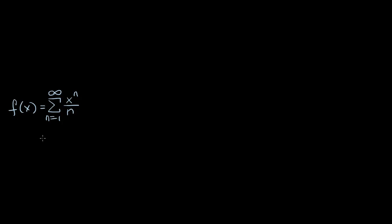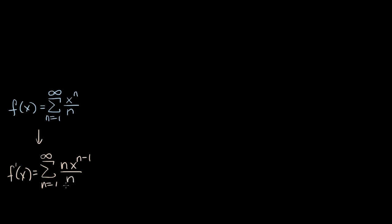What do I mean by that? Well, that means that the derivative of f, f prime of x, is just going to be the derivative of each of these terms. So that's going to be the sum from n equals one to infinity. The derivative of x to the n is n times x to the n minus one, so I could write this as n times x to the n minus one, all of that over n, and these n's will cancel out. So this is just going to be x to the n minus one.